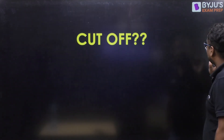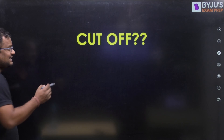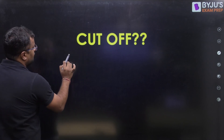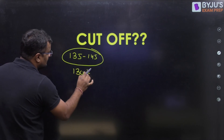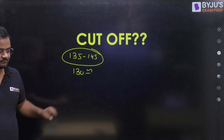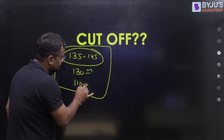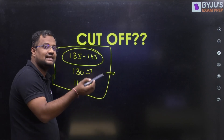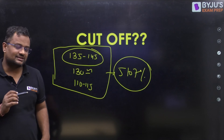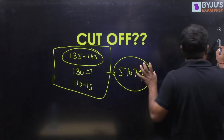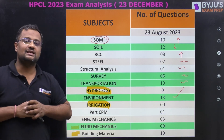For general category candidates, the expected cutoff is around 135 to 145, with a possible 10 to 15 marks fluctuation. For OBC it may be around 130, and for other reserved categories it may be around 110 to 115. There is an expected 5 to 7 percent fluctuation overall. This is just an expectation since this is the first time negative marking has been introduced — let us see what the actual cutoff turns out to be. This was the detailed analysis of HPCL 2023.